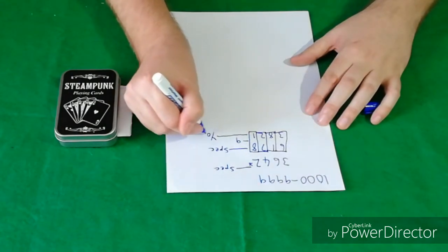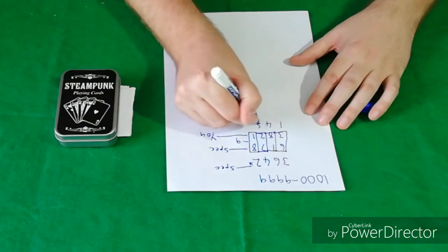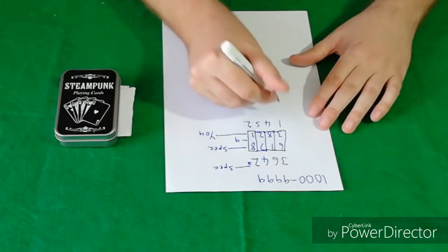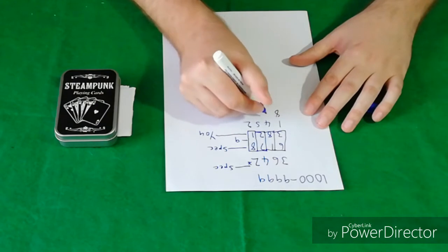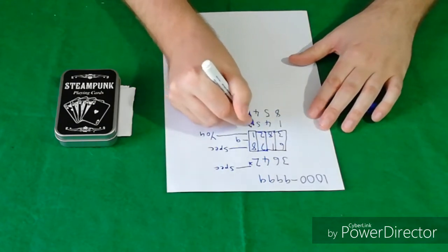Then your spectator writes a number, another number. So this one was you. Then your spectator writes another number. Let's say 1452. It really doesn't matter. Then you write it the exact same again, not the exact same, but it must add up to 9 again, 8547.